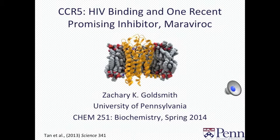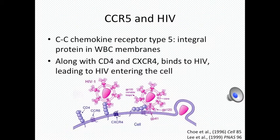Shown here is the crystallographic structure of CCR5 embedded in a lipid bilayer cell membrane. CC Chemokine Receptor 5 is an integral protein in the membranes of human white blood cells, and it functions as a G protein coupled receptor in the immune system.